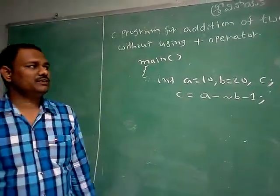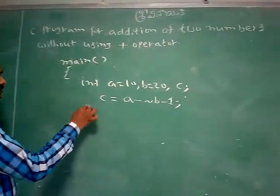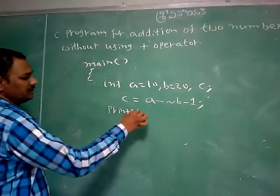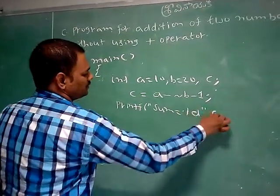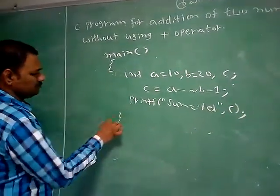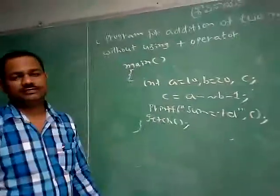So these are the three solutions we can write in a C program without using the plus operator. Printf, you can write sum equals percentage D, and add the header.